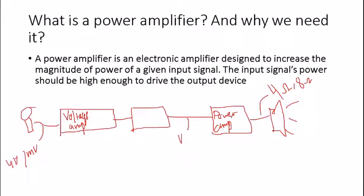Power amplifiers are designed to have low output impedance and are biased to obtain maximum voltage swing. This allows them to drive the output device because the current coming out of the power amplifier is sufficient to turn on the speaker, unlike voltage amplifiers which have no current amplification.